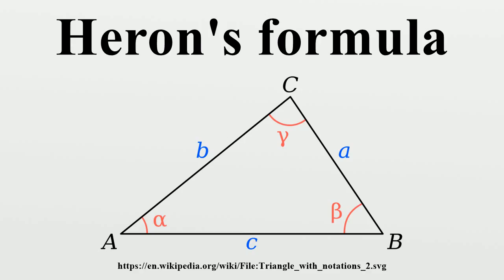Another generalization of Heron's formula to pentagons and hexagons inscribed in a circle was discovered by David P. Robbins.